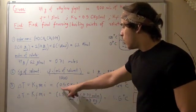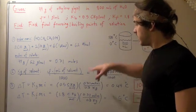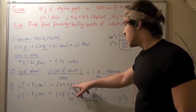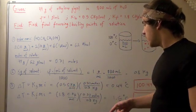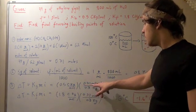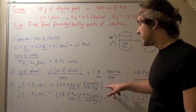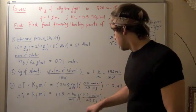So this equals 0.5, our constant Celsius times kilogram over mole multiplied by 0.71 moles over 0.8, our molality. The kilograms cancel. The moles cancel.